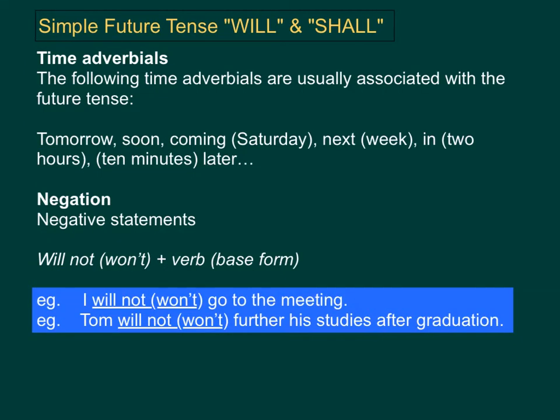We often find the words will and shall used together with time adverbials, or adverbs of time. These are descriptors of time that we can use in a sentence. The following time adverbials are usually associated with the future tense: tomorrow, soon, coming, next, in, later. Some examples: I will be at school in 2 hours, or I will play basketball the coming Saturday.